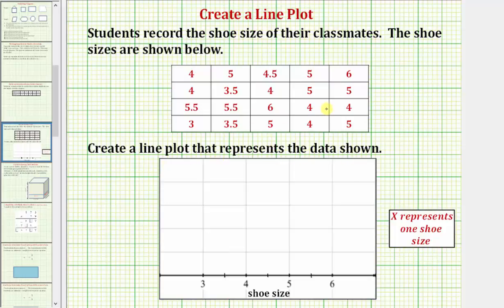Because these are shoe sizes, we have a horizontal number line here at the bottom for the shoe size, and each x represents one shoe size. Because we have twenty shoe sizes, we'll be plotting twenty x's to create the line plot.